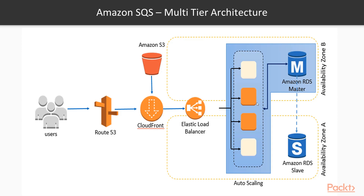The instances are part of an auto scaling group ensuring that we handle incoming traffic and load, expanding or contracting the fleet as demand dictates while keeping costs to a minimum. At the backend we have an RDS database system configured with multi-AZ so that we can failover from the master database to a slave copy should there be a problem with the master RDS database.